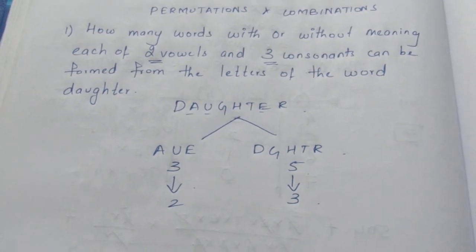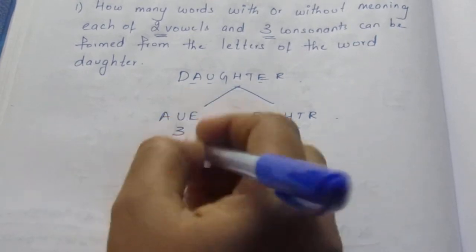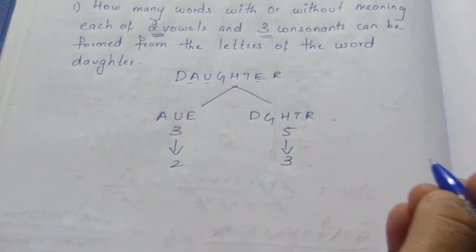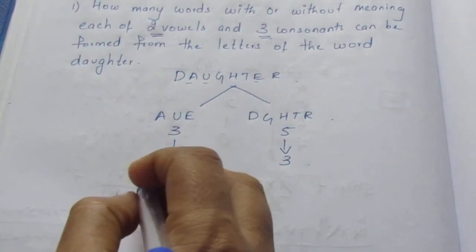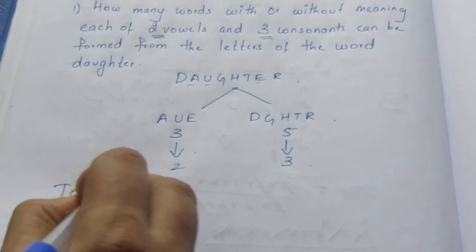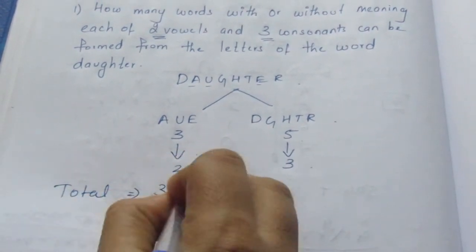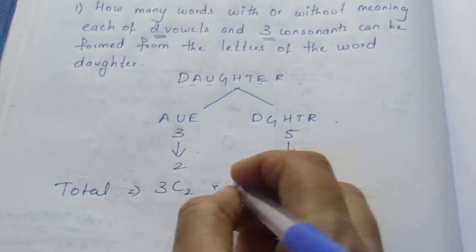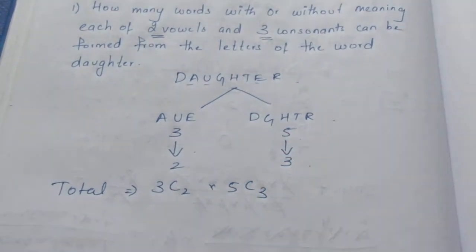Usually people do a mistake here. We are just selecting from three to two and five to three. You know that the total number of ways will be 3C2. From three we are selecting two. From five we are selecting three, so 5C3.